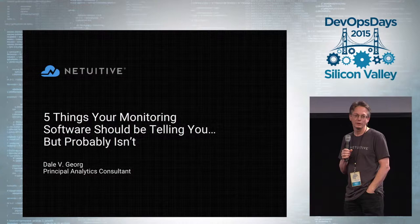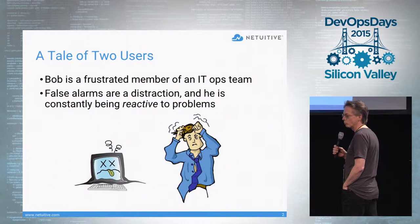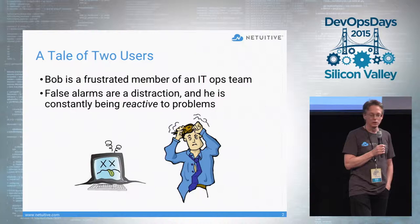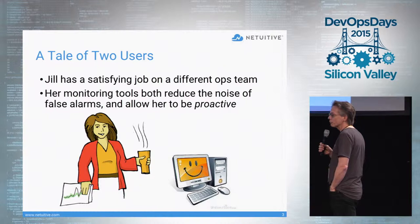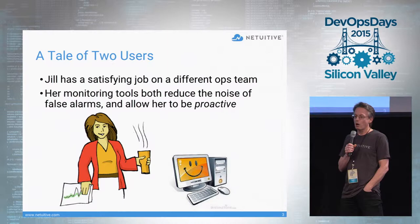We're going to do that by looking at two different users and comparing their experiences. First, we have Bob, who is very frustrated with his monitoring tools because he spends all of his time either fighting fires or getting distracted by false alarms. In contrast, we have Jill, whose monitoring tools reduce false alarms and allow her to be more proactive — the result of which is she and her computer systems are a lot happier. So what is her software telling her that Bob's isn't?